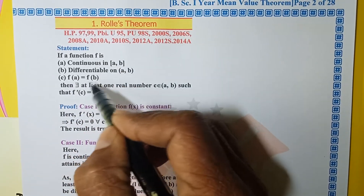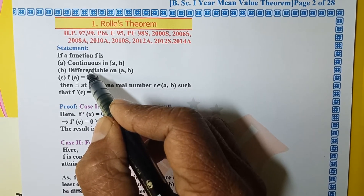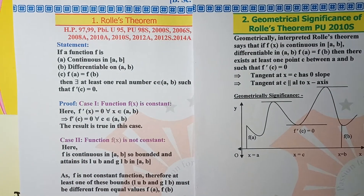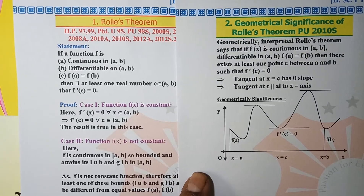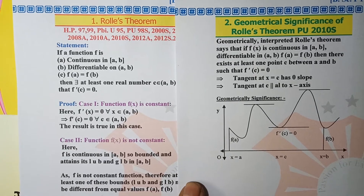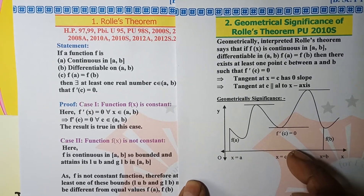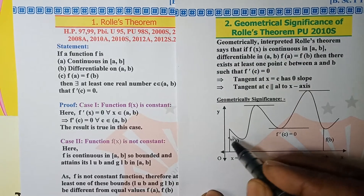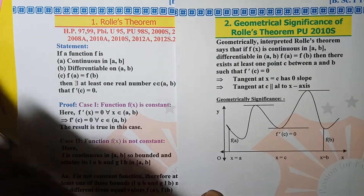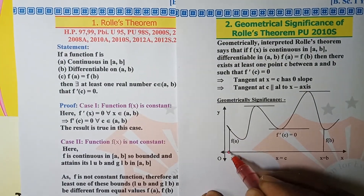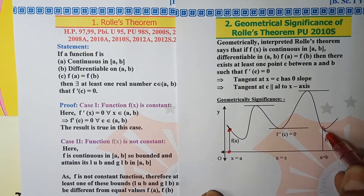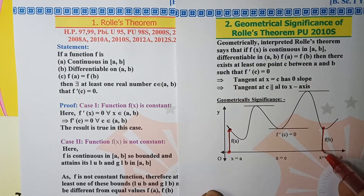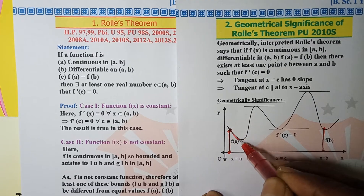This is the statement of Rolle's theorem — f'(c) = 0. Looking at a graph: we have a graph where x = a is this point and x = b is this point. At x = a the function is continuous, at x = b it is continuous, and at each point in between it is continuous — there is no gap between a and b, and that is why it is continuous.